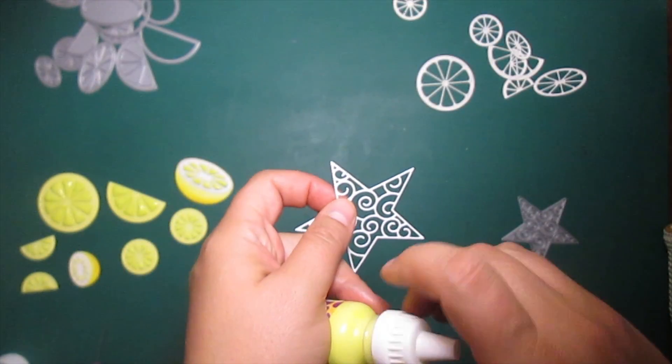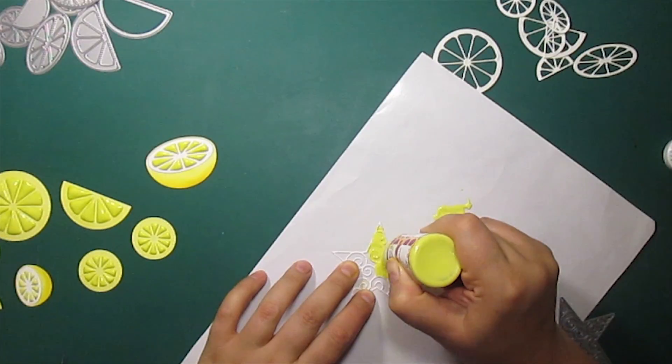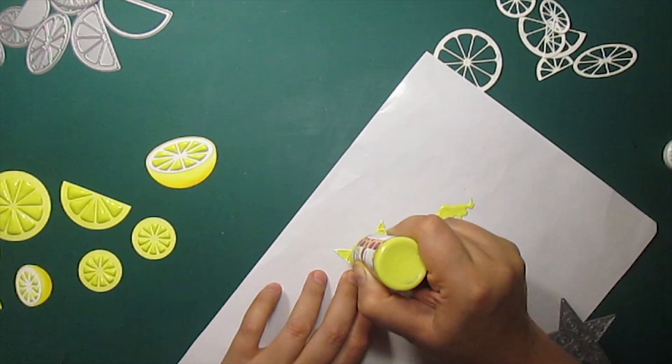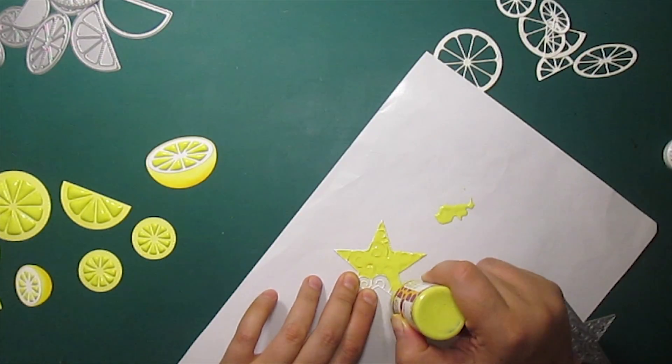Another element I'm going to add are those stars. I'm just putting it to a non-stick sheet and covering it with enamel dots. Then I'll set it aside to dry.